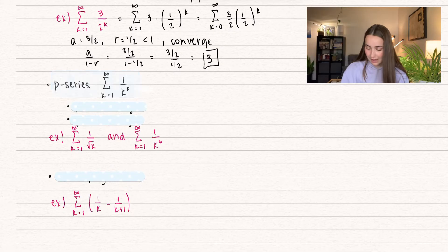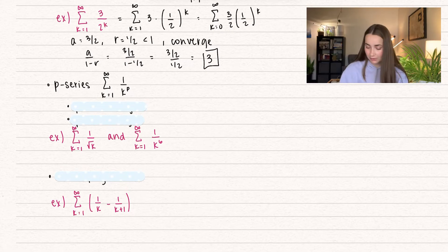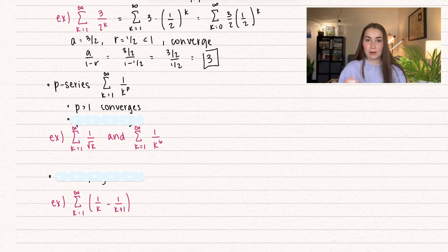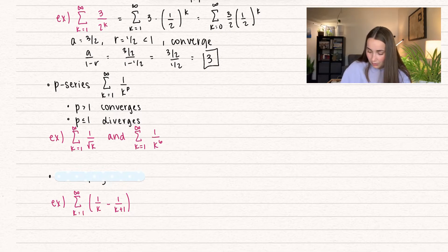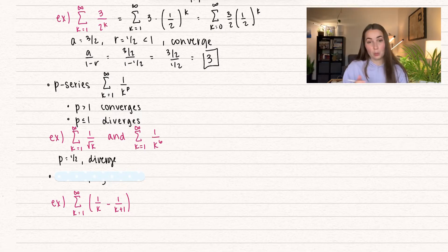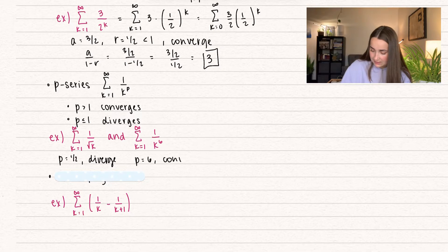Another special series is the p-series — that's one over k to the power of p. If p is greater than one, the series converges. If p is less than or equal to one, the series diverges. For example, one over k to the one half has p equal to one half, which is less than one, so it diverges. Another series with p equal to six — since six is greater than one — converges. The p-series is a very common and useful test.